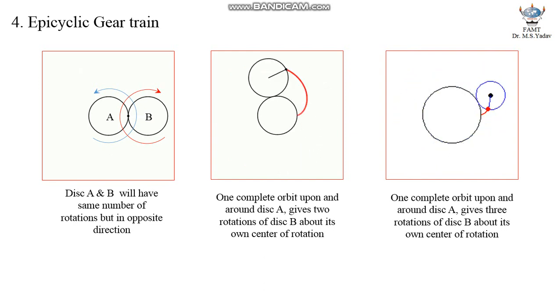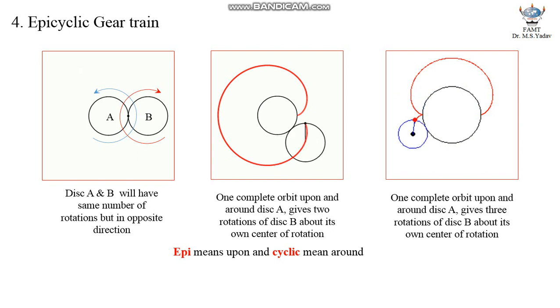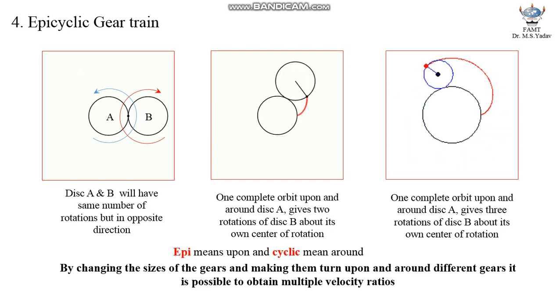Look at this animation closely. In this movements, upon is called epicyclic and around is called epicyclic. We can conclude from this discussion that by changing the sizes of gears and making them turn upon and around different gears, it is possible to obtain multiple velocity ratios.